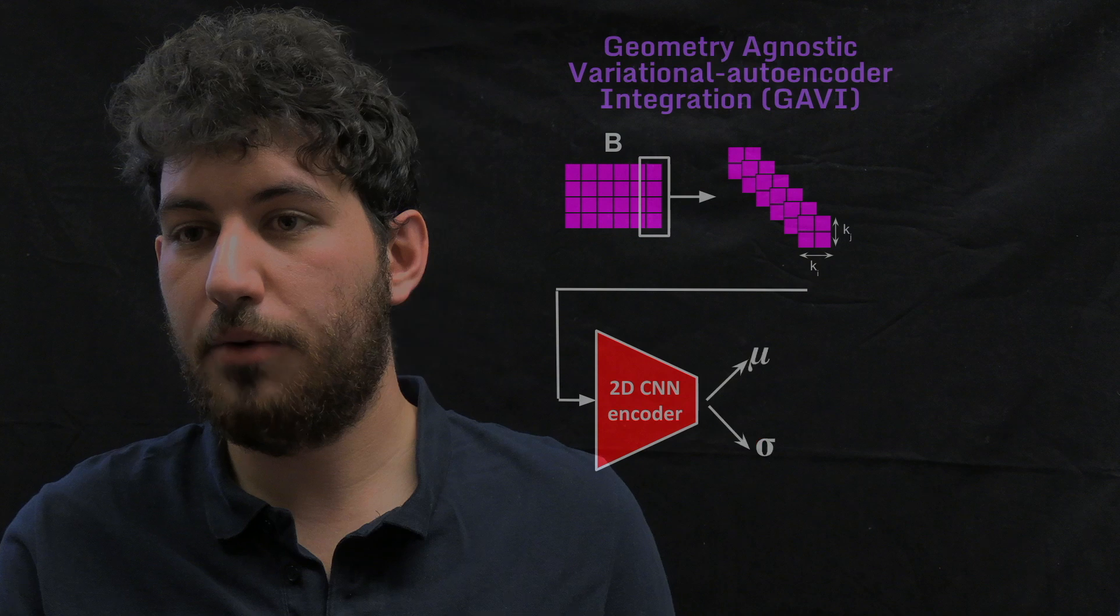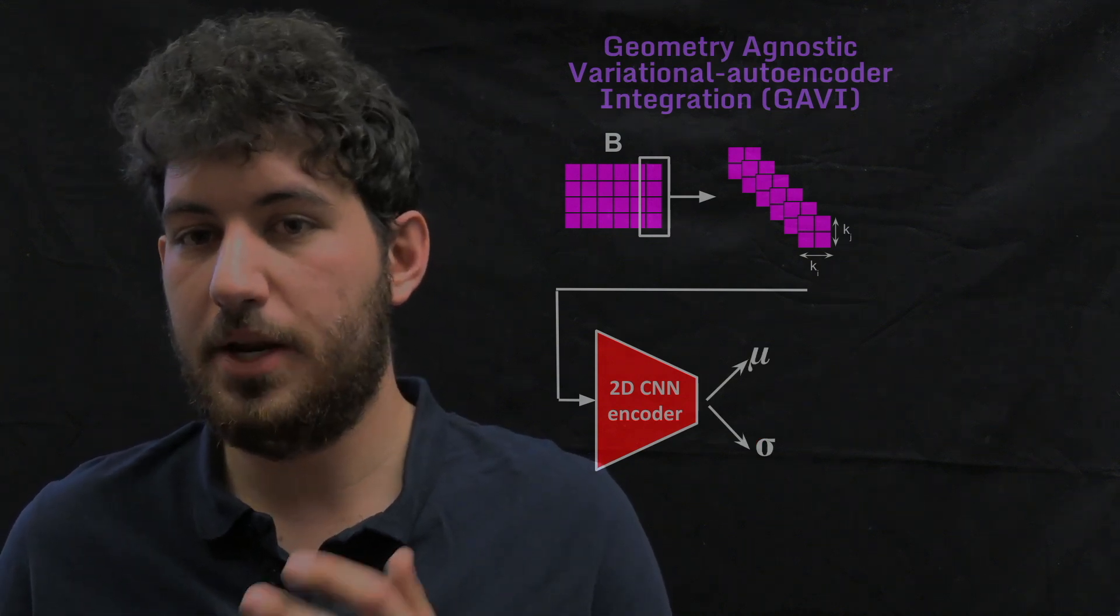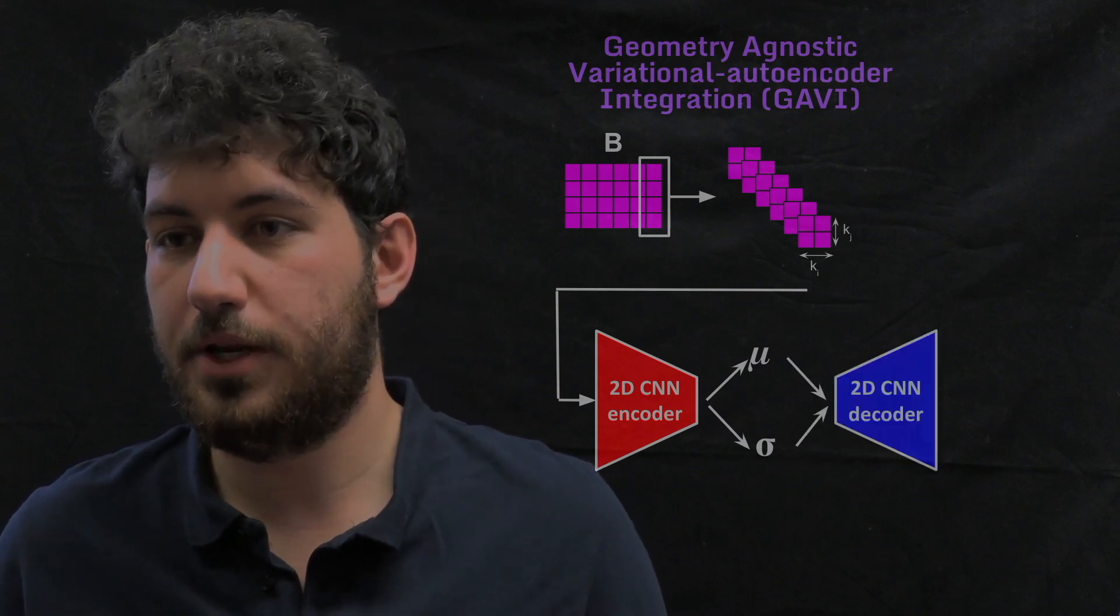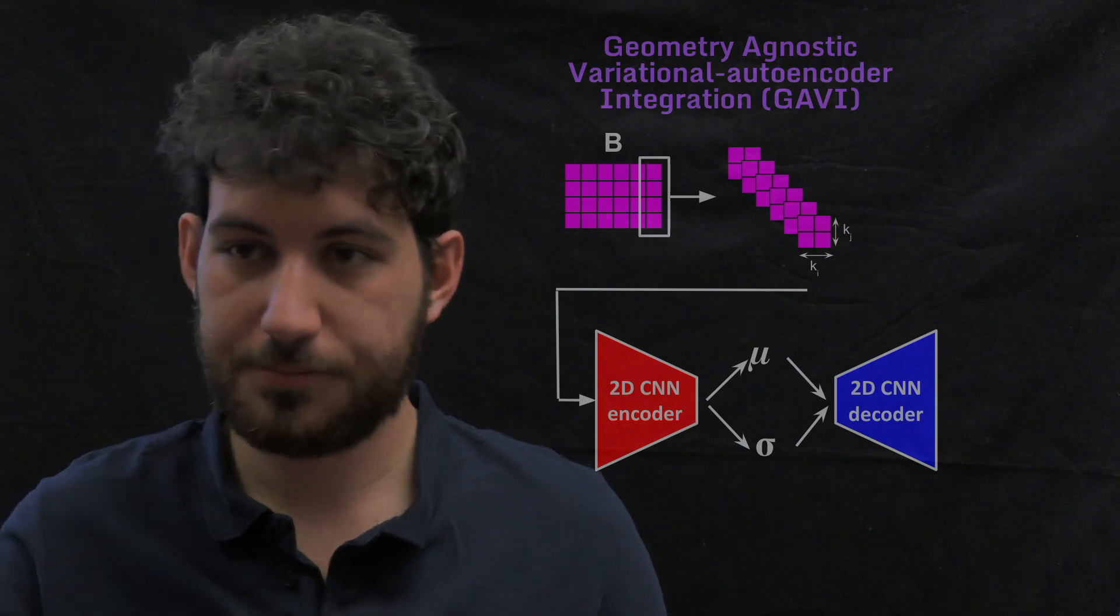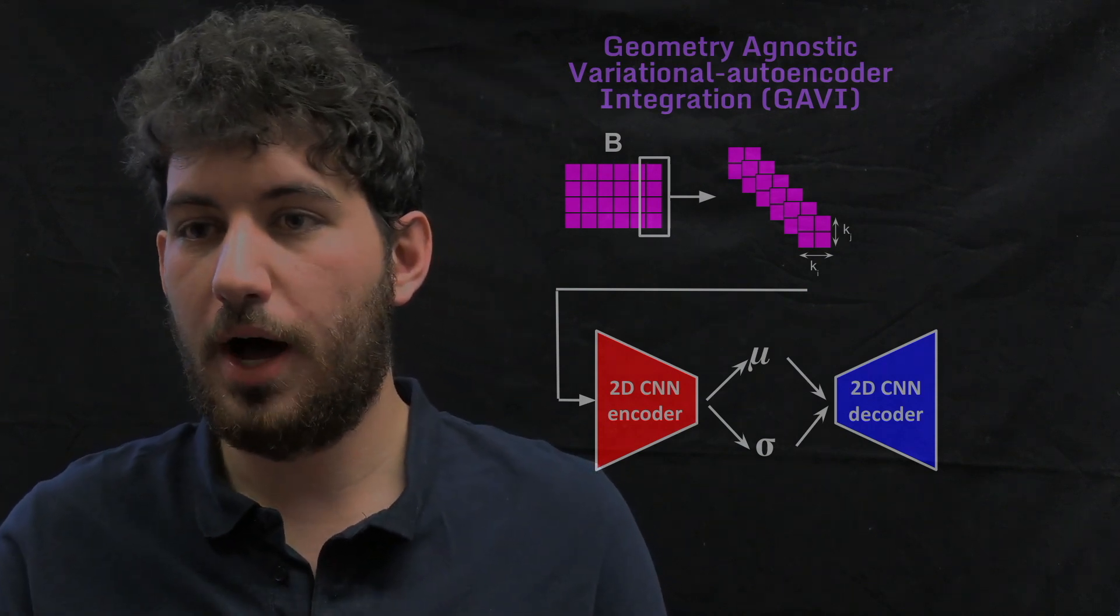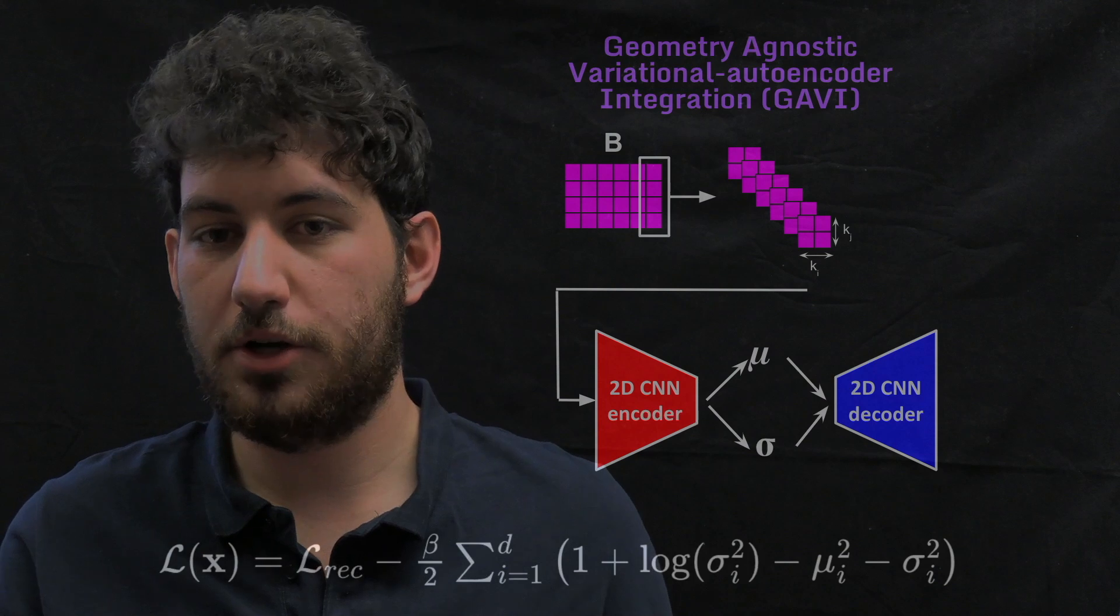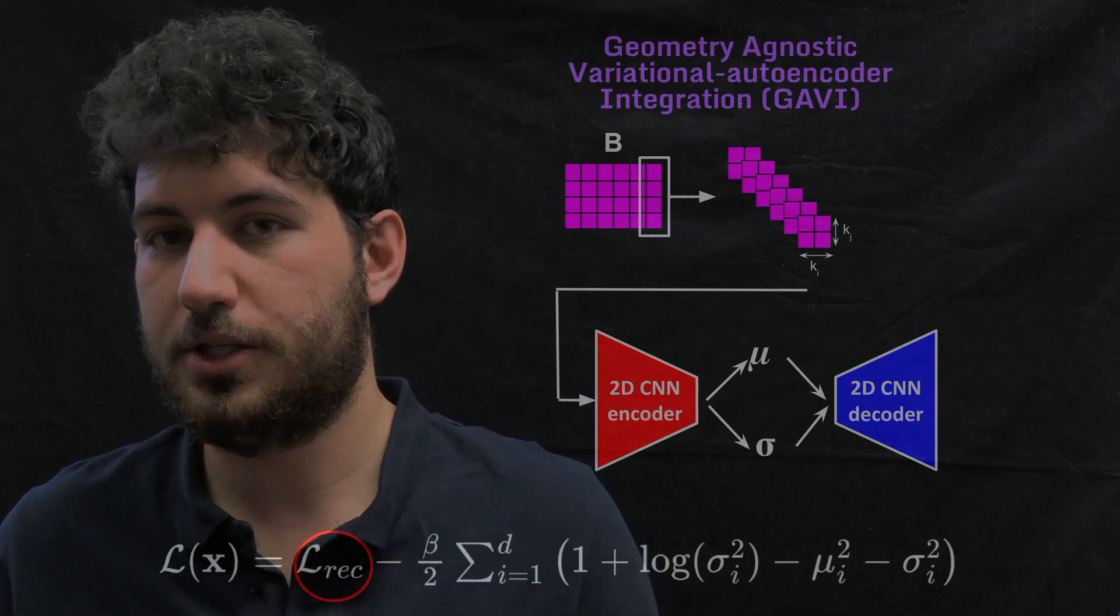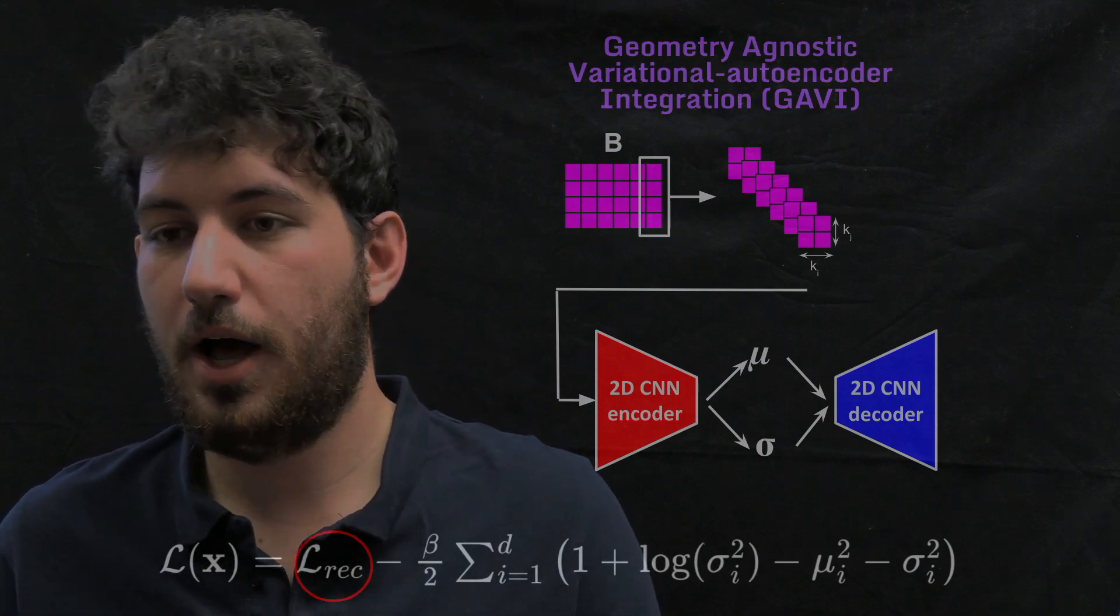Then we are working with a variational encoder. So what we obtain after the encoder is actually the mean and standard deviation of the latent variables. And then we have a symmetric decoder to recover the original B matrix. As I said, we have here a variational autoencoder. So our loss function is composed by the reconstruction loss, which in this case we train with the mean square error.